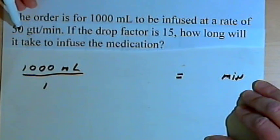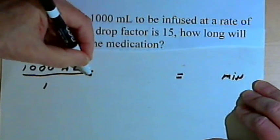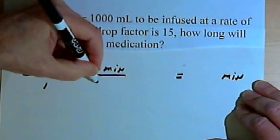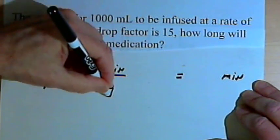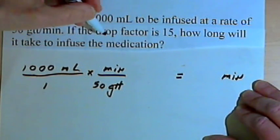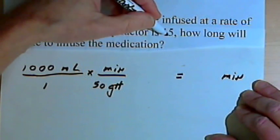The rate that we're dealing with is 50 drops per minute. So once again, I'm going to put minutes in the numerator, and I'll take that 50 as the denominator.